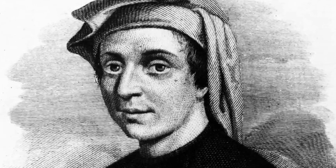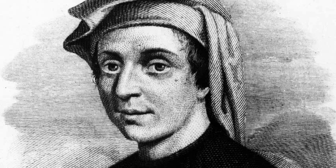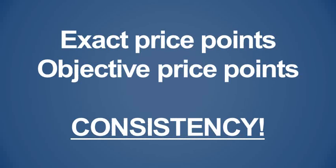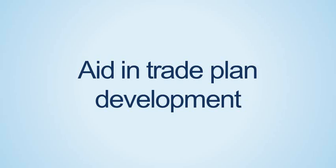In this installment of How to Take Your Trading Profits, we're going to head back to the years 1170 to 1240, the days of Leonardo Bonacci. There's no need to get into the history of Fibonacci, as there's so much on the internet and in published materials about the ratios. The history is not really what is important to us in terms of trading exits. Using Fibonacci ratios can give you exact and objective price points to exit any trade. You'll also be able to have trade plans that give you the chance to scale out partial profits, hold for an all-out target, and have a way to measure if the trade has strength to fulfill your objectives.